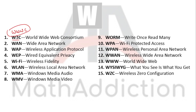Now W full forms. W3C: World Wide Web Consortium — W3 means three Ws, i.e., World Wide Web. WAN: Wide Area Network. WAP: Wireless Application Protocol. WEP: Wired Equivalent Privacy. Wi-Fi: Wireless Fidelity.